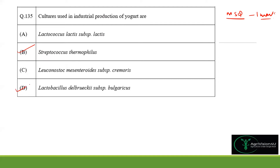Lactococcus lactis and Leuconostoc mesenteroides are also lactic acid bacteria but they are not used in industrial production of yogurt. The two cultures used in combination in a ratio of 1:1 are Streptococcus thermophilus and Lactobacillus bulgaricus. Therefore option B and C are the right answers for this MSQ question.